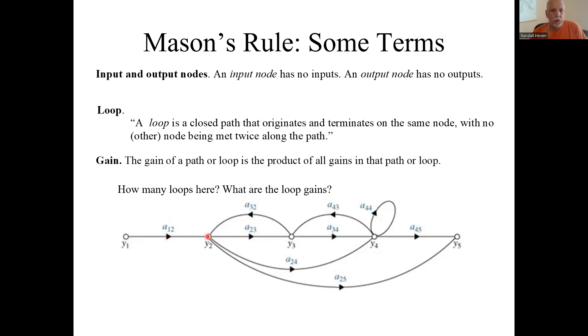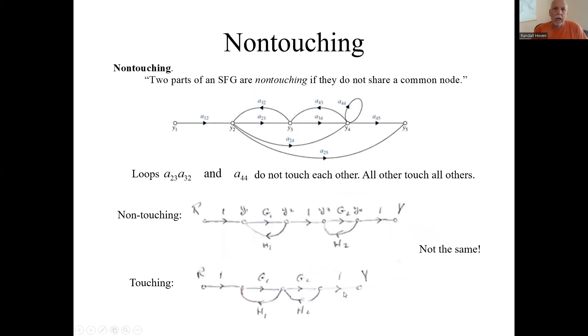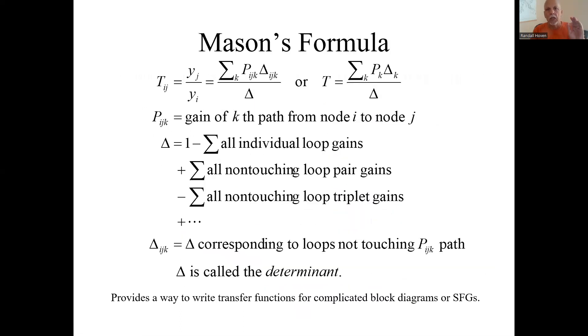This path that goes from Y1 to Y2, then down around here up to Y5, its path gain would be A12 times A25. So now that we've done that, let's actually get to Mason's formula.